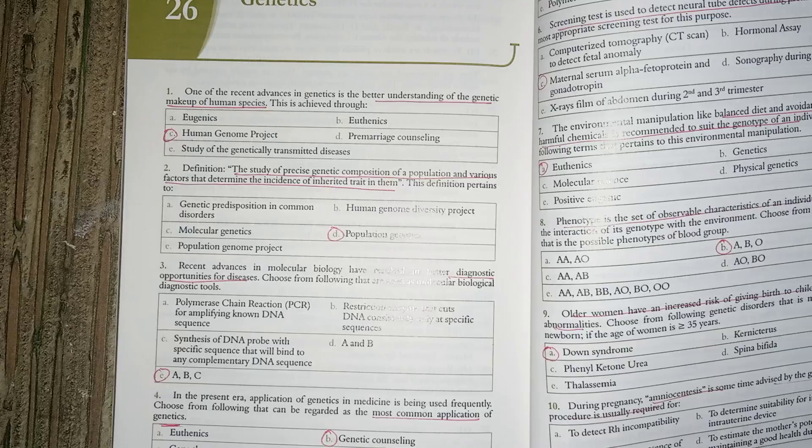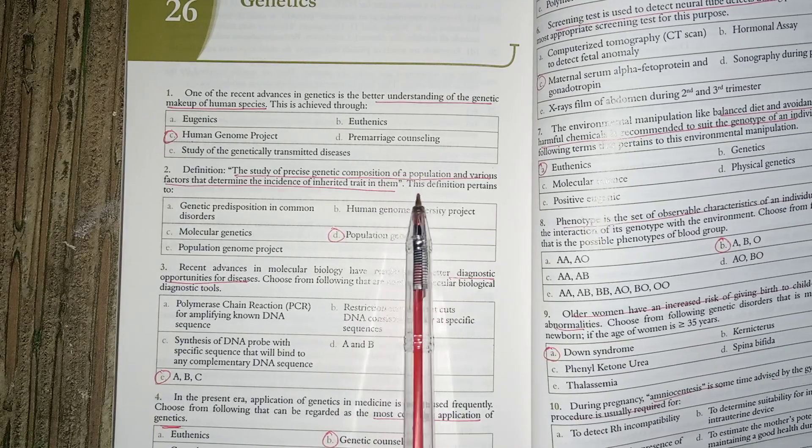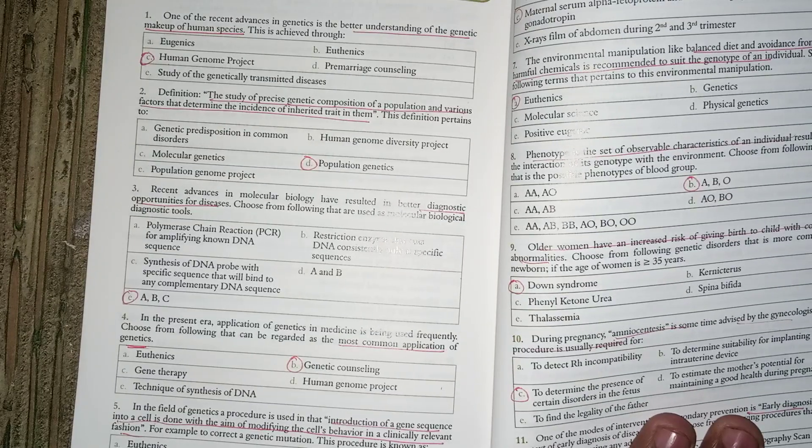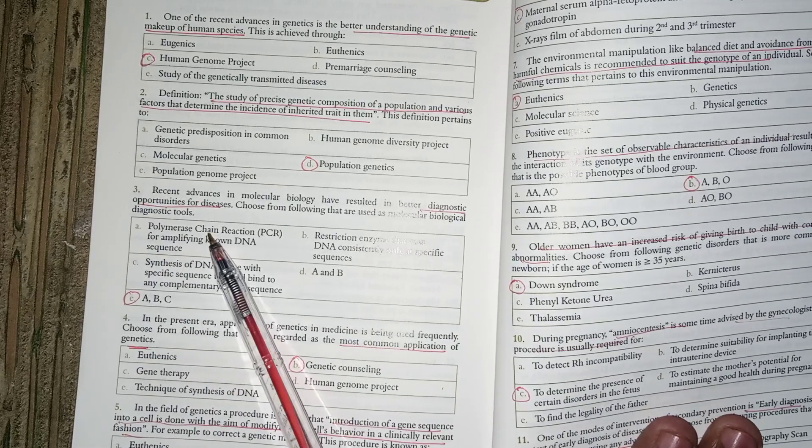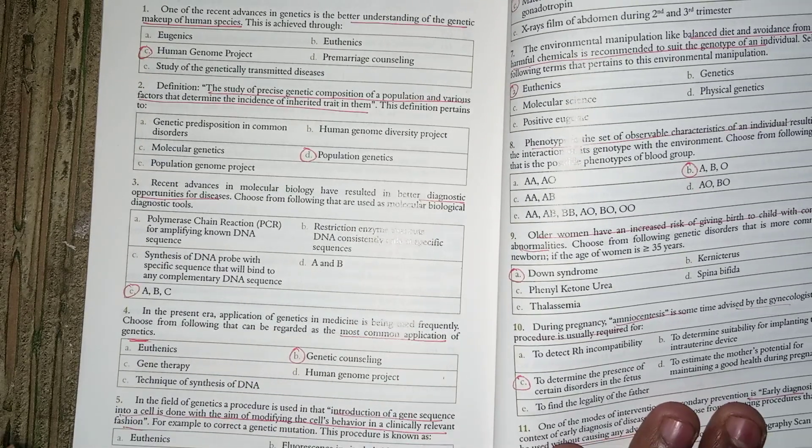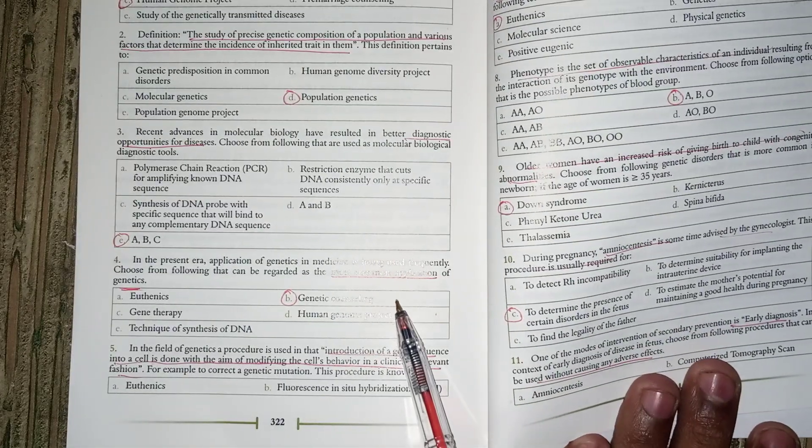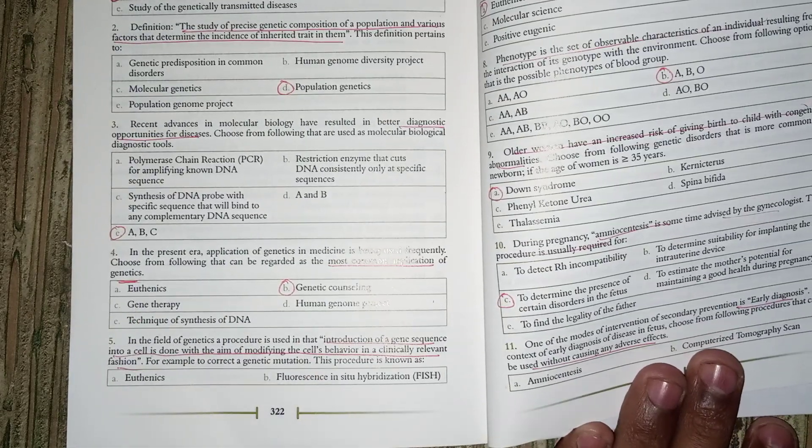Next definition: the study of precise genetic composition of the population is population genetics. Better diagnostic opportunities include polymerase chain reaction, DNA probes, or restriction endonucleases. The most common application of genetics is genetic counseling.